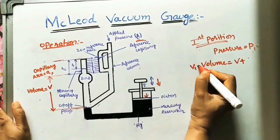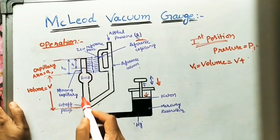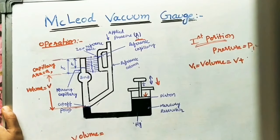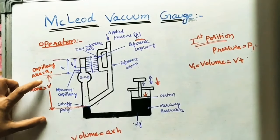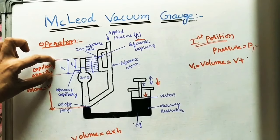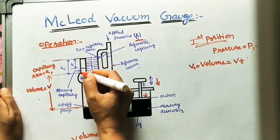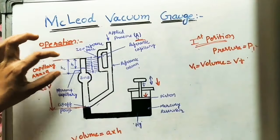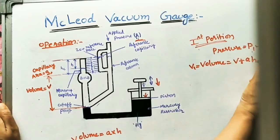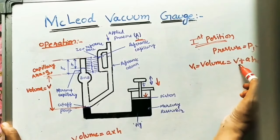V1 is the volume in the first position. We know the areas, diameters, and height of the capillary, so we can calculate volume using the formula: area times height. This volume V1 equals V (the bulb volume from cutoff point to the bulb) plus A times hc (capillary area times capillary height). So in the first position, initial pressure is P1 and initial volume is V plus A·hc. In the second position, I apply pressure downward on the piston.